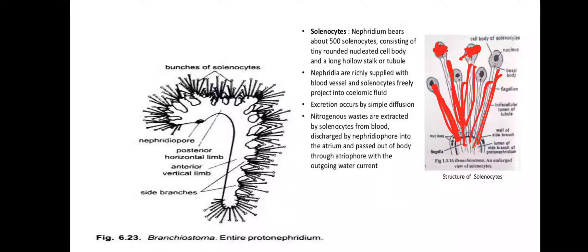The coelomic fluid is projected into the coelomic fluid, and the other fluid is passed into the atrium, so the excretion process is created. It is a simple diffusion process. The nitrogenous waste is discharged from the solenocyte and blood by nephridiopores. Through the nephridiopores, the excretory waste passes into the atrium and is released from the atrium to the outside in the outgoing water current.